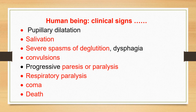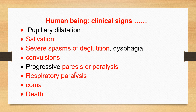Continuing the symptoms in human beings with rabies: there is pupillary dilatation and salivation, which is common in both animals and humans. Severe spasms of the deglutition muscles cause dysphagia — difficulty in swallowing. The disease then progresses to convulsions, then progressive paralysis or paresis. Respiratory paralysis is a dangerous condition, as respiration is a very important function. Finally, the human being enters the stage of coma and death.